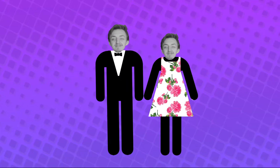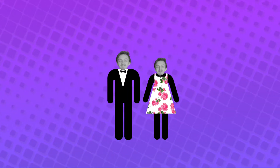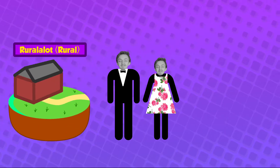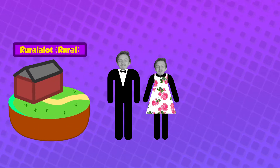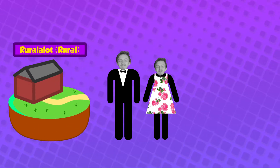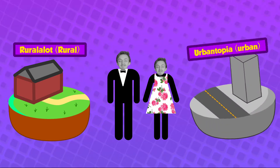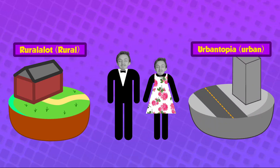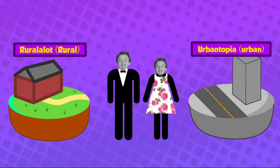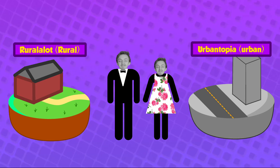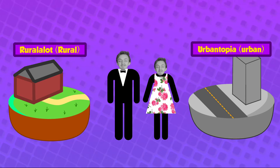Let's have a look at the rural-urban migration of the Bobbinsons family. The Bobbinsons have decided that the sweet little village of Ruralot is not quite doing it for them anymore, and they've decided they're going to move to the city of Urban-topia for a few different reasons. Let's take a look at the factors that have influenced the Bobbinsons' migration.